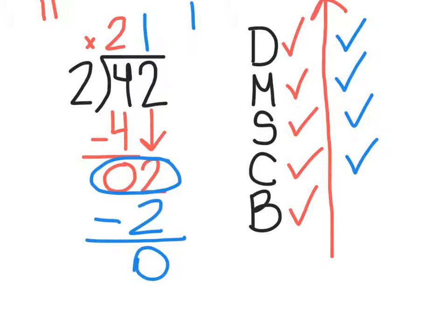And finally, is there another number in the doghouse or in the dividend to bring down? In this case, the answer is no. So I teach them to put a big X there, which says, I'm done.